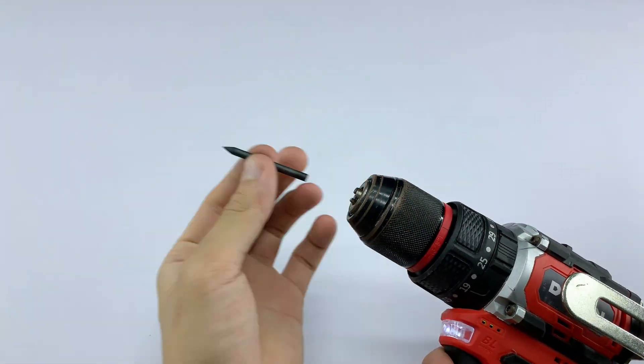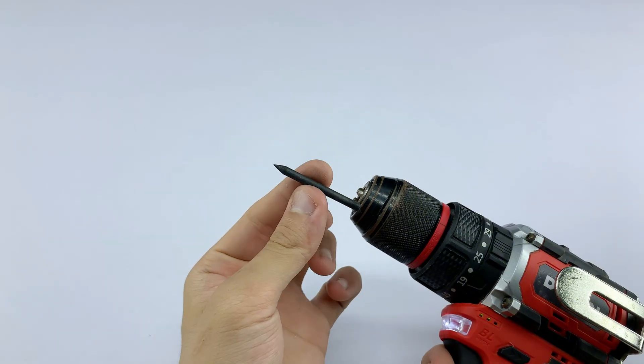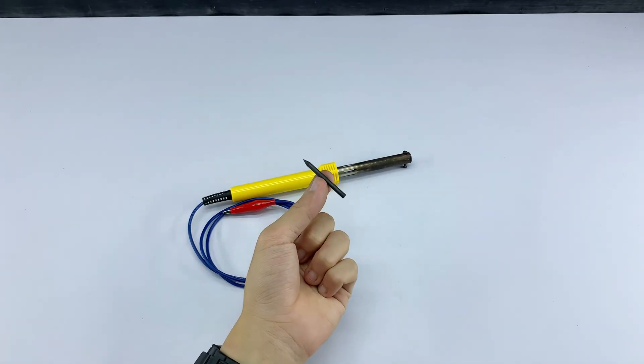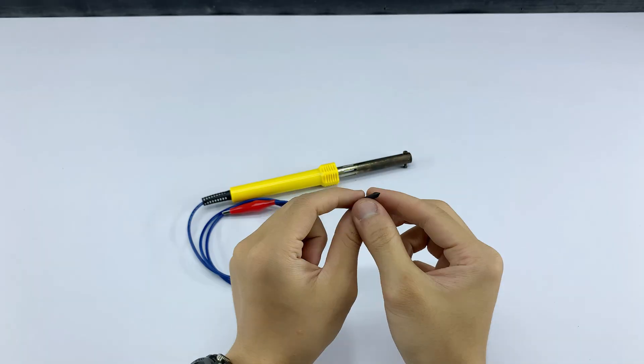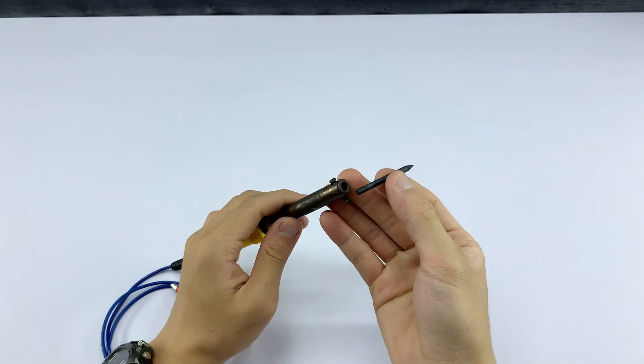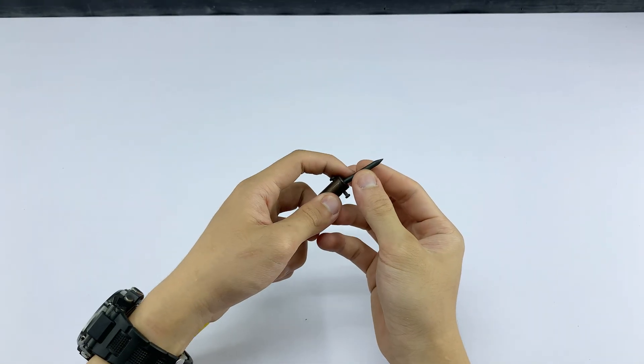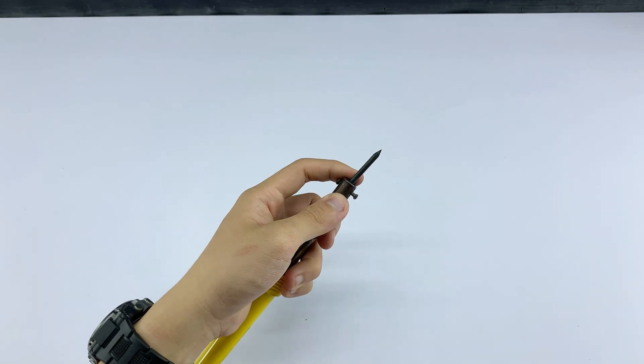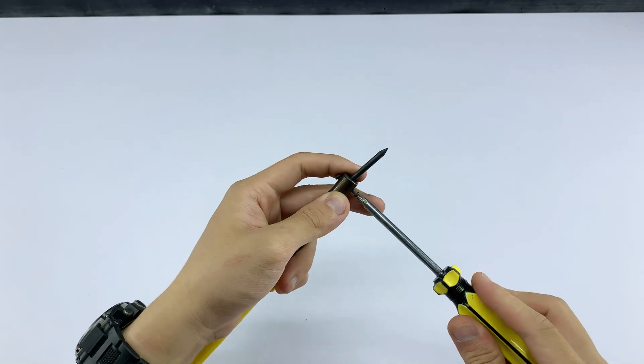I'm taking that bit from the drill and attaching it to the tip of my reassembled soldering iron handle. This is going to be my new soldering tip.